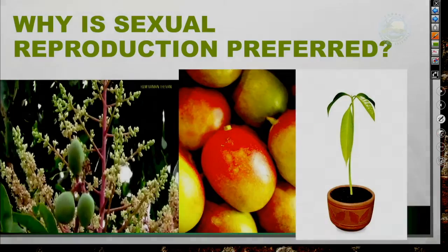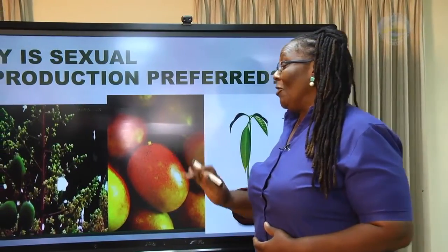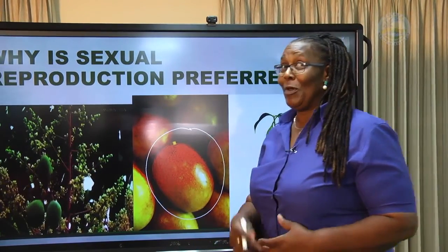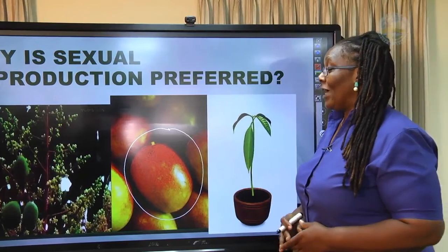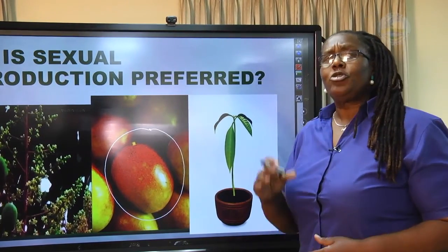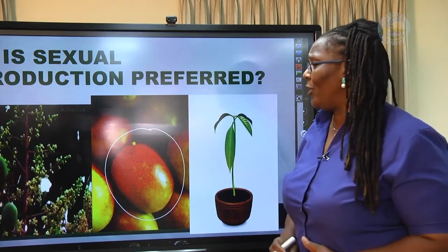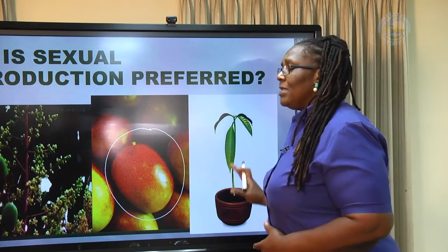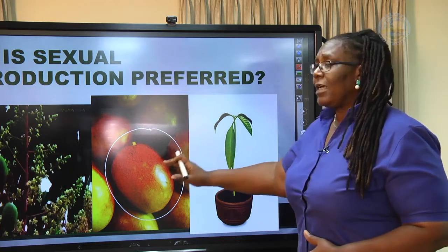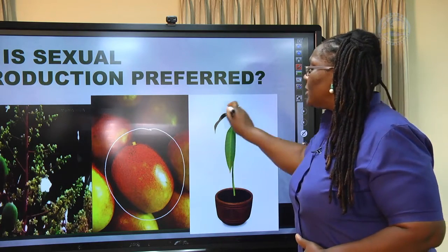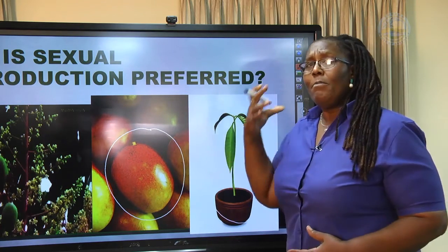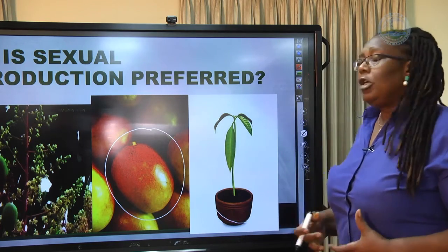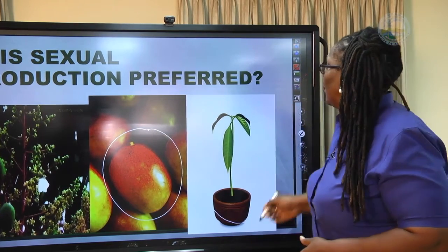This mango was produced through the process of sexual reproduction. We need to be able to produce plants to continue the species. Sexual reproduction will produce plants that are stronger and will be able to withstand different environmental conditions.